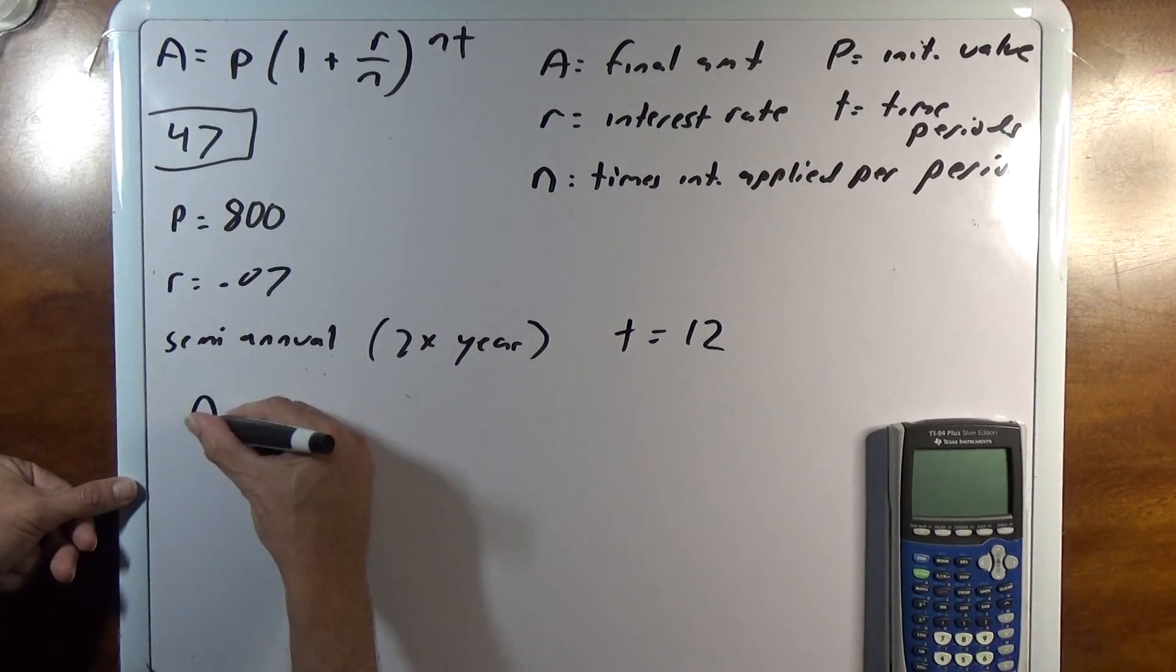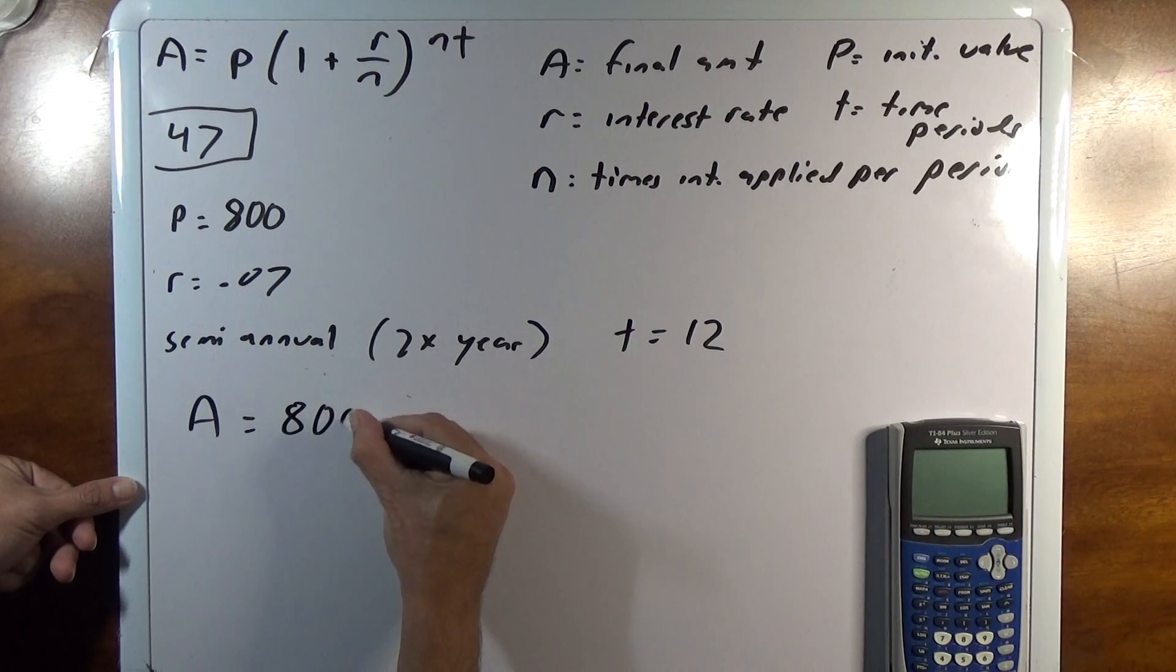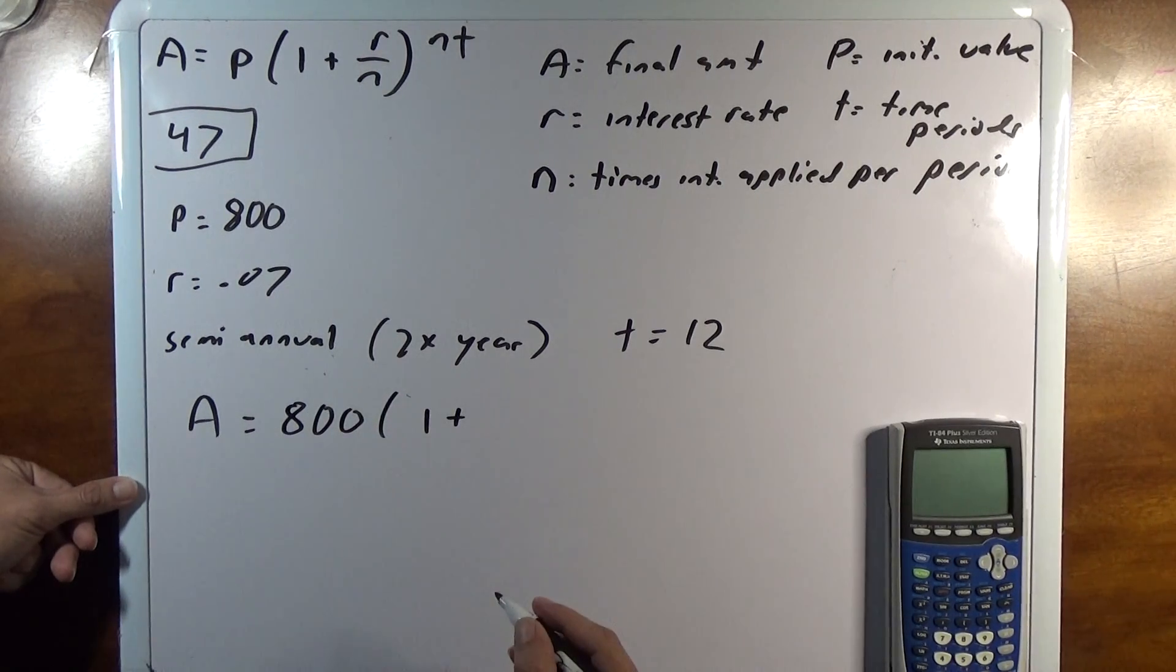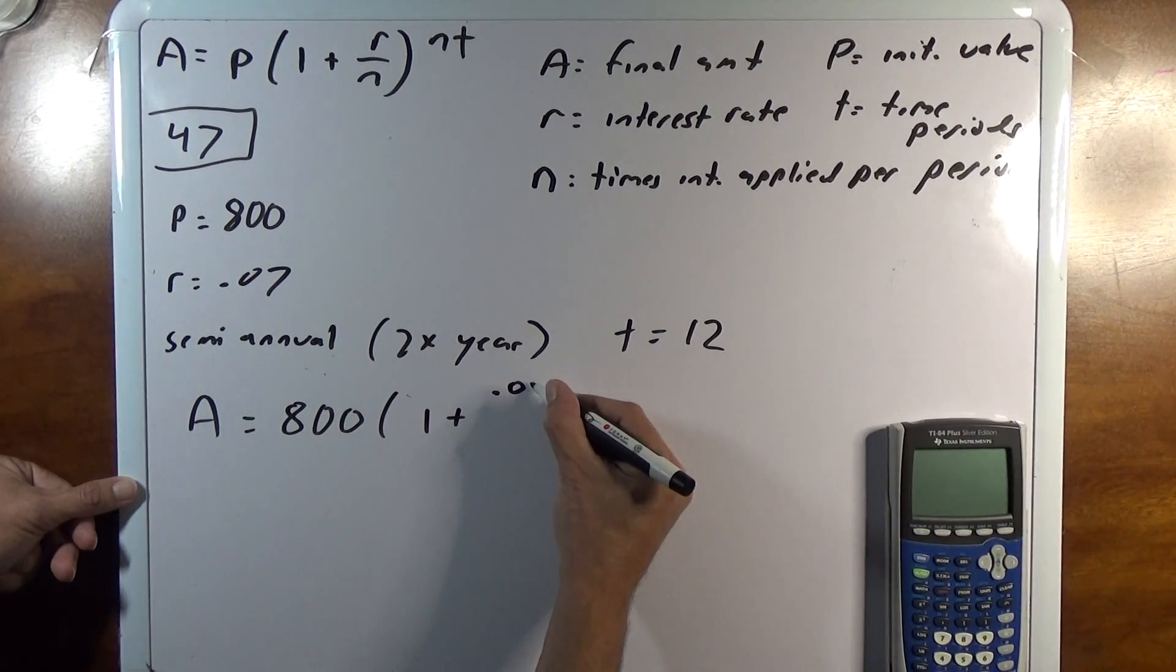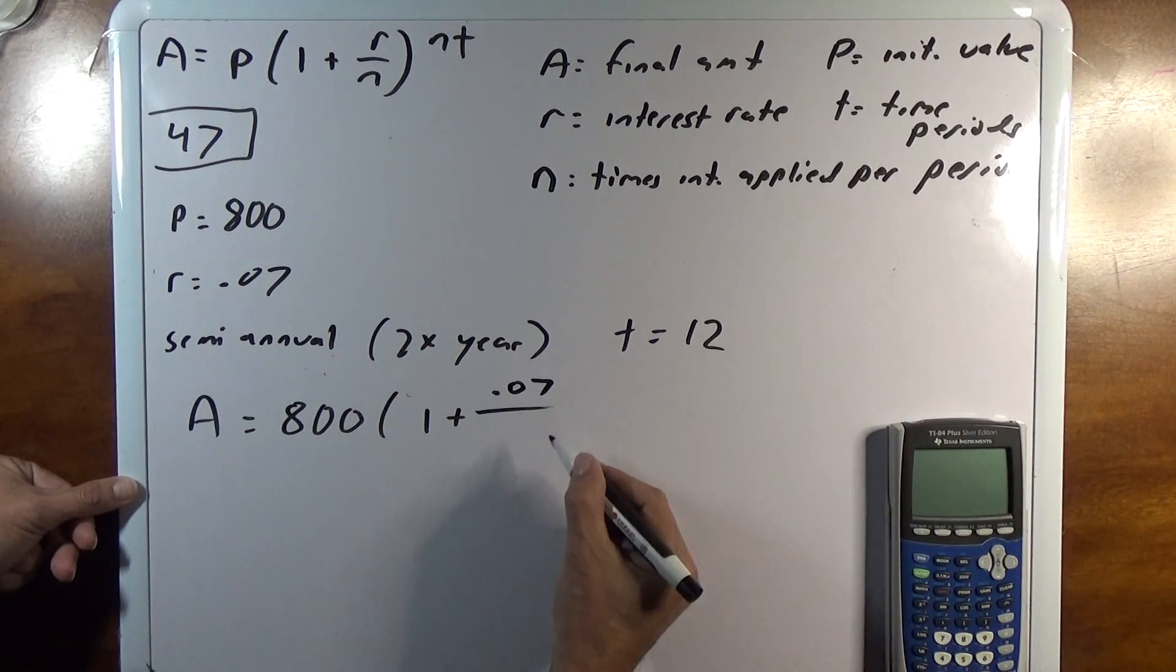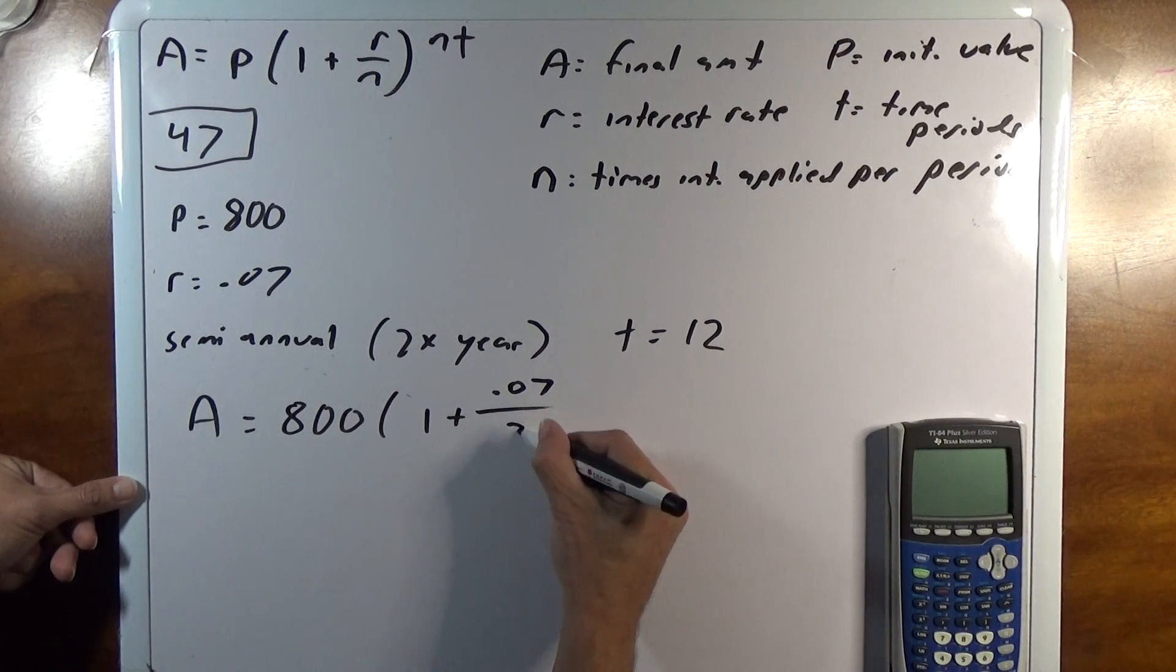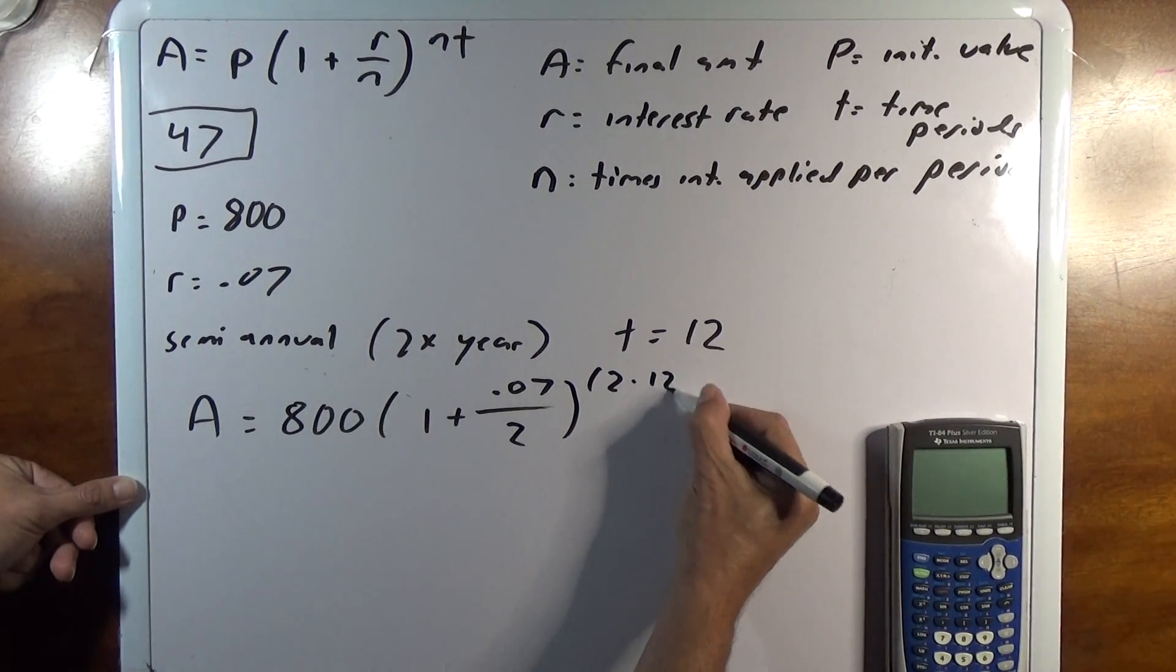So A is what I'm solving for. I'll put them in the right spot. 800 times 1 plus R over N, our interest rate 0.07 over N which is 2, to the Nt, so that's 2 times 12.